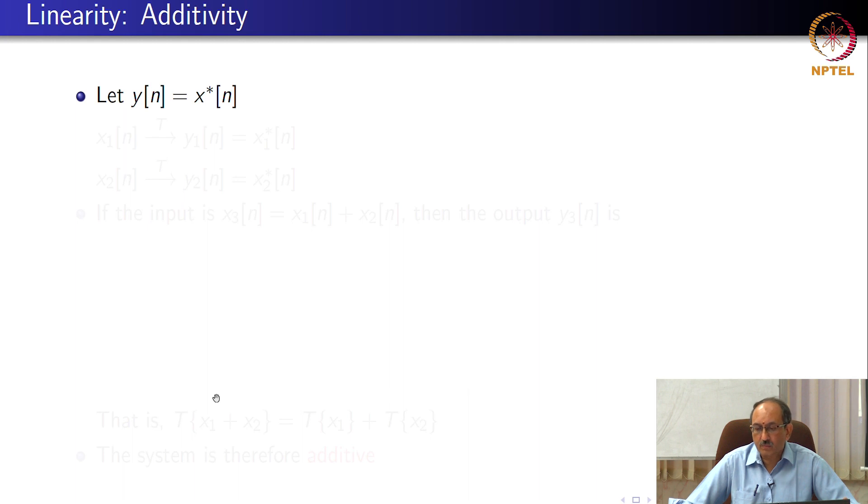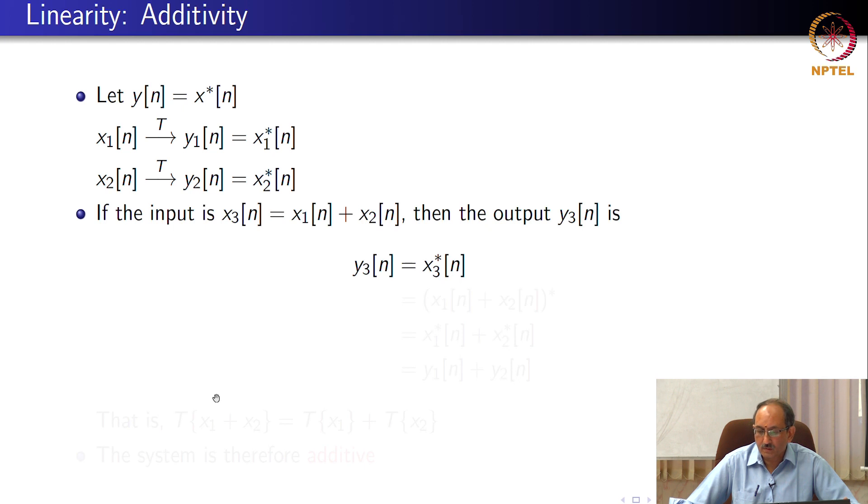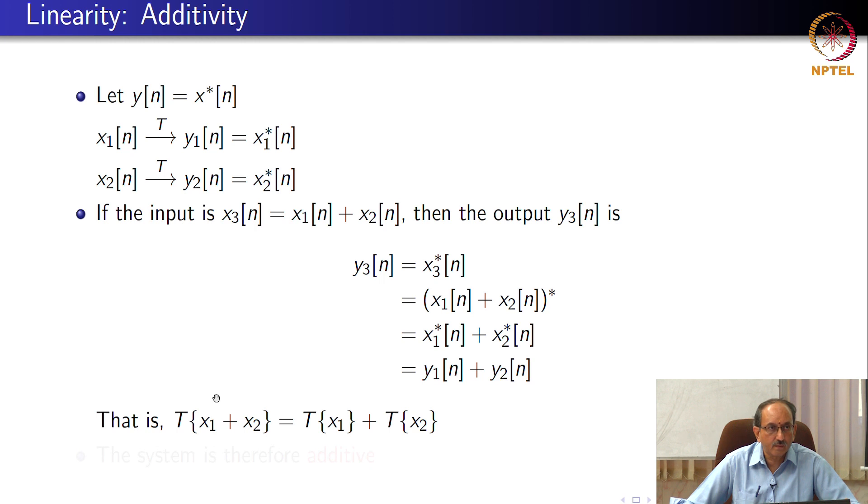So, here is a simple example, y[n] equals x*[n]. So, if x1 produces y1, y1 in this case is x1*, y2 is x2*. If you now give it x3[n] which is x1 plus x2, y3 is x3*, x3 is nothing but x1 plus x2. Therefore, (x1 plus x2)* is x1* plus x2*, and lo and behold, this is y1 plus y2. Therefore, the system is indeed additive. So, here is an example of a system that is additive.